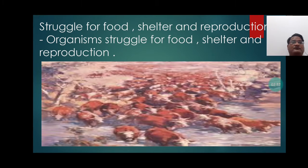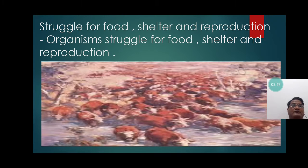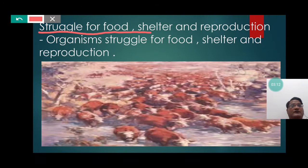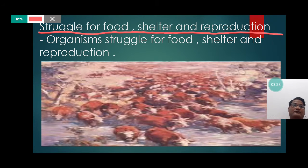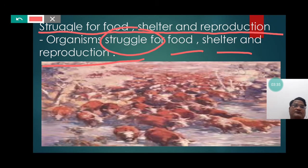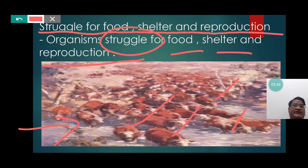Organisms struggle for food, shelter, and reproduction. This was the second concept put forward by Charles Darwin, in which he stated that organisms, due to continuous reproduction, further start struggling for food, shelter, and reproduction. Here you can also notice that a huge number of cattle are struggling for obtaining proper food, shelter, and reproduction.